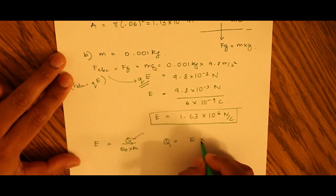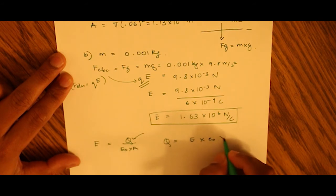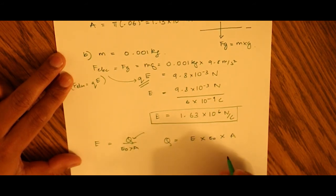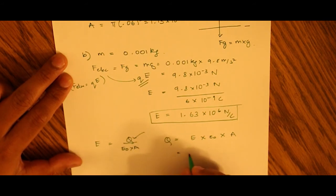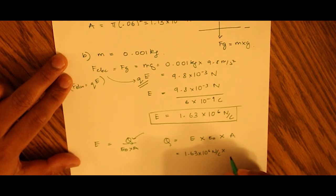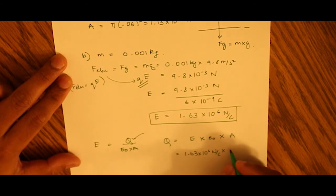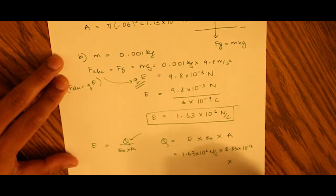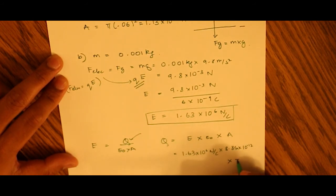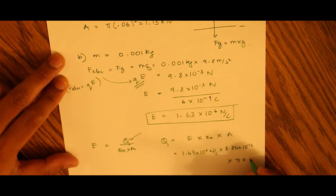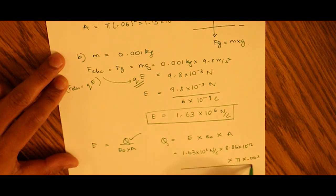So q equals E electric field times epsilon naught, the permittivity of free space, times area. So this is 1.63 times 10 to the 6 newtons per coulomb. The permittivity constant is 8.85 times 10 to the negative 12, and the area is pi r squared, which is pi of 0.06 squared. So we have to find out what this value is.